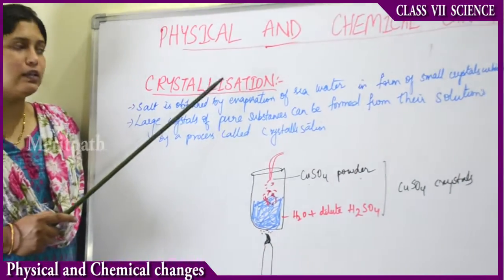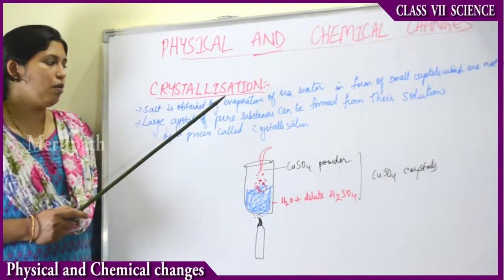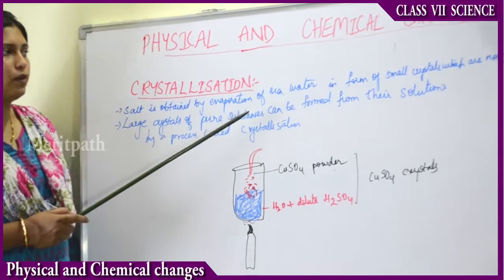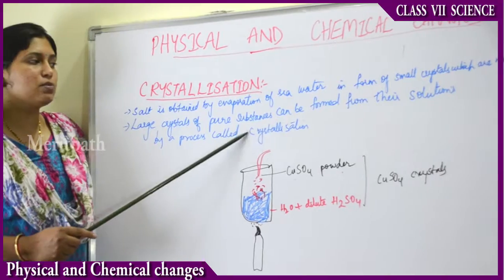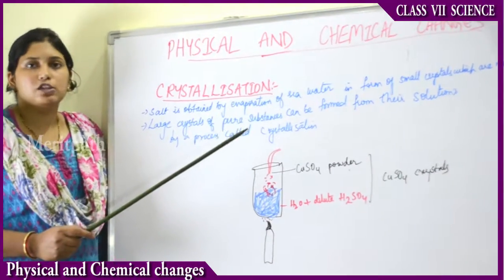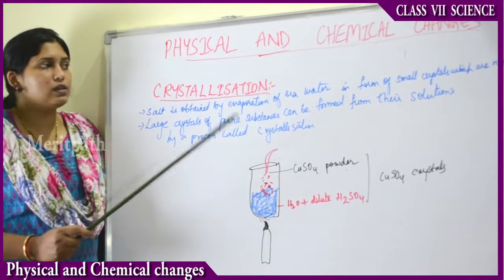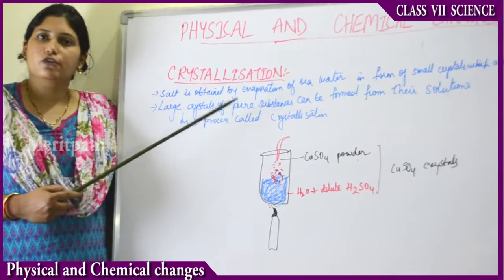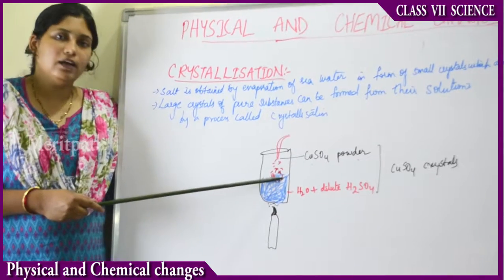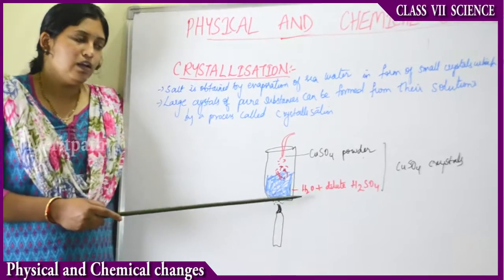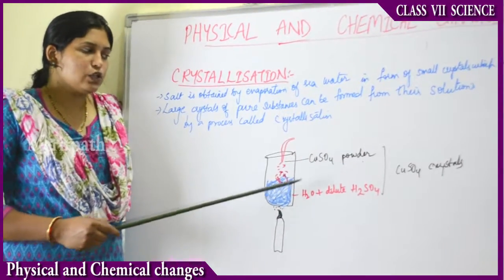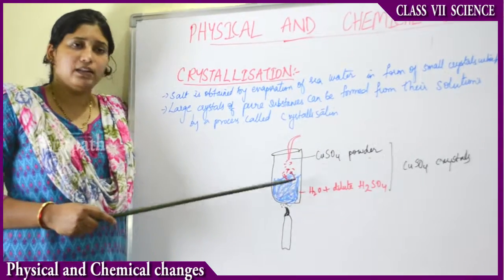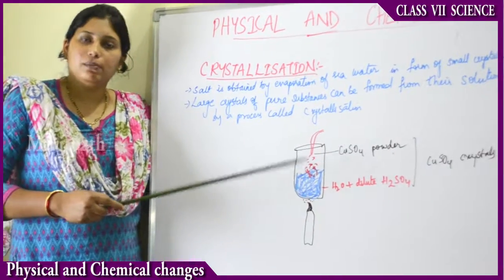We will now learn about crystallization. Salt is obtained by the evaporation of sea water — when sea water is evaporated, small crystals form which are not pure. Large crystals of pure substances can also be formed from their solutions. The process of forming large crystals of pure substances from their solutions is known as crystallization. Take a beaker, fill it with a solution of water plus dilute sulfuric acid, then heat it over a candle flame and slowly start adding copper sulfide powder to it, continuously stirring.